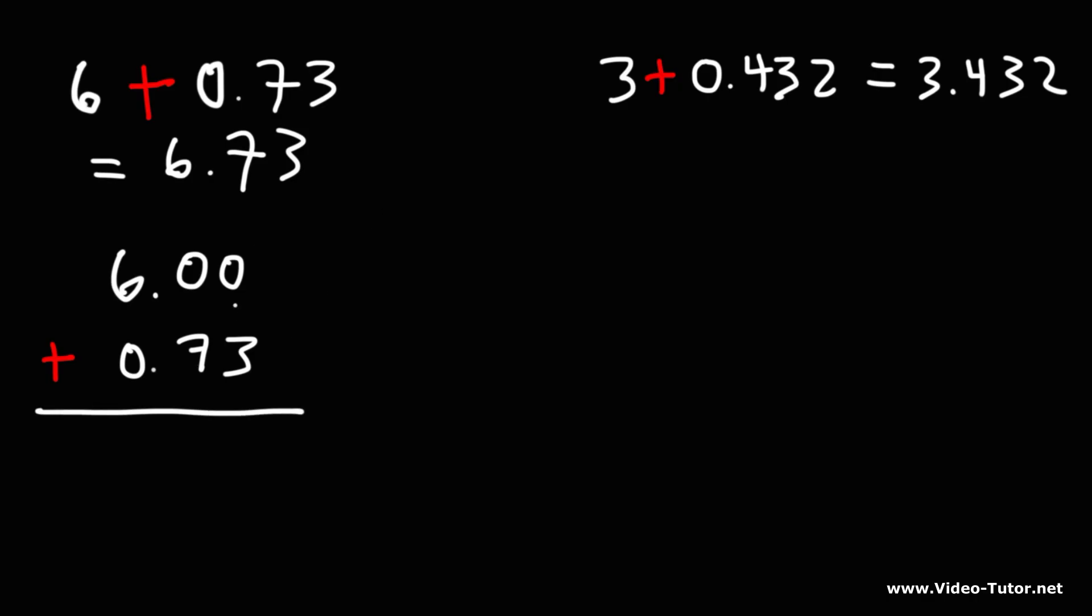And then after that, you can add. 0 plus 3 is 3. 0 plus 7 is 7. Bring the decimal point down. 6 plus 0 is 6. And you get 6.73.